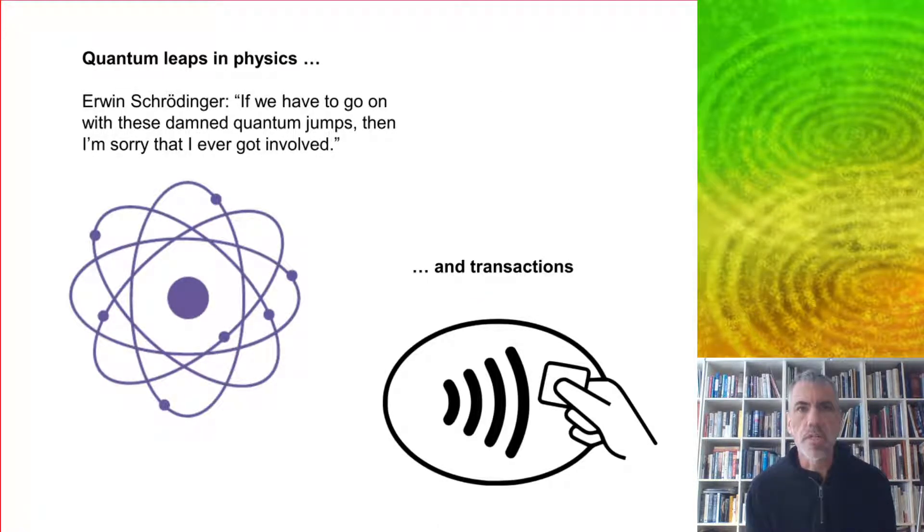Perhaps the most obvious such property is the way that money jumps. In physics, Erwin Schrodinger said, if we have to go on with these damned quantum jumps, then I'm sorry that I ever got involved. And with financial transactions, of course, the same thing happens all the time. Like when you tap your card at a store, the money doesn't flow out continuously, it just jumps.